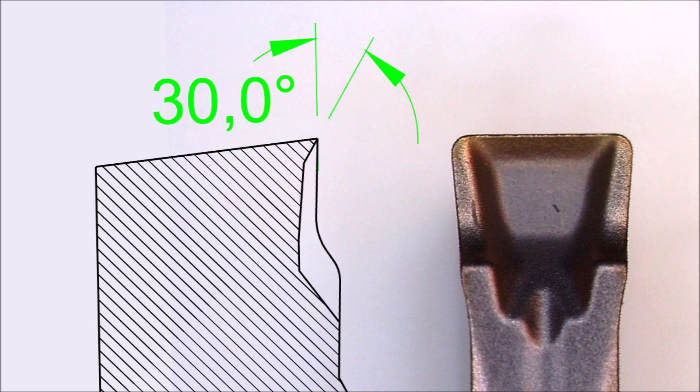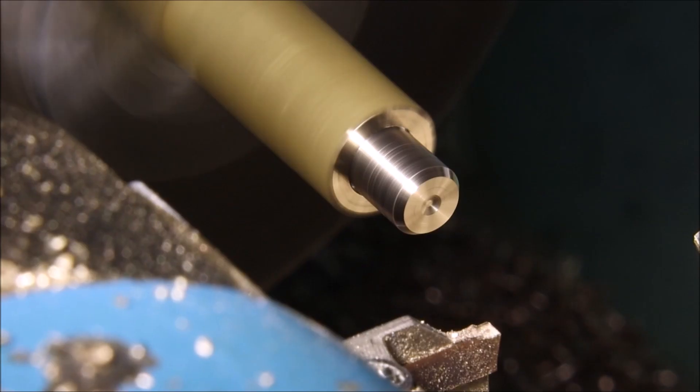And this 30 degrees of rake here, you can see on this side profile that I drew up of the GF insert, is probably what makes it such a low cutting force insert. 30 degrees is pretty extreme.